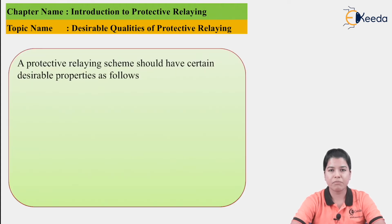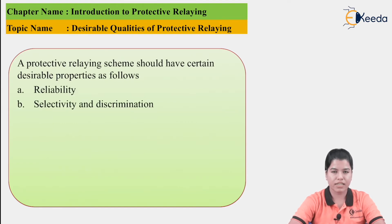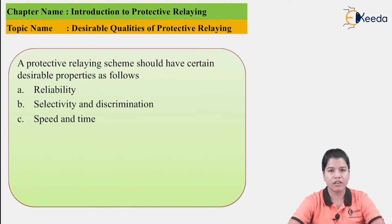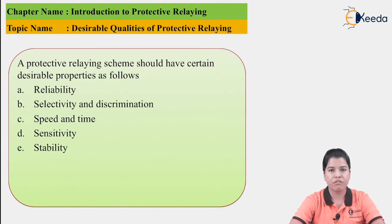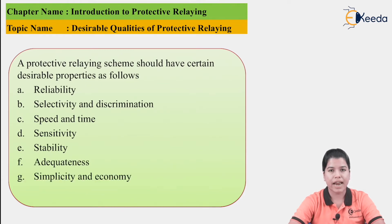Certain desirable qualities that the protective relaying should have are: 1. Reliability, 2. Selectivity and Discrimination, 3. Speed and Time, 4. Sensitivity, 5. Stability, 6. Adequateness, 7. Simplicity and Economy. Let us study each of these qualities in detail.